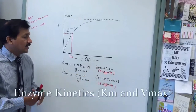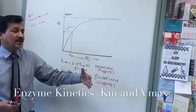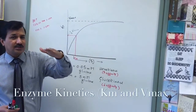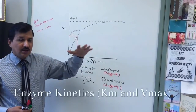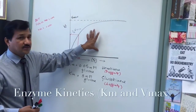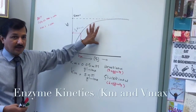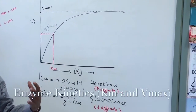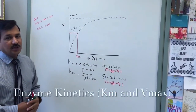Vmax indicates the capacity or ability of the enzyme to consume substrate. Hexokinase will have a lower Vmax, whereas glucokinase will have a higher Vmax — glucokinase will use more substrate and convert glucose into glucose-6-phosphate as long as glucose is being provided. So KM says when the enzyme is active, and Vmax says what is the capacity and ability of that particular enzyme.